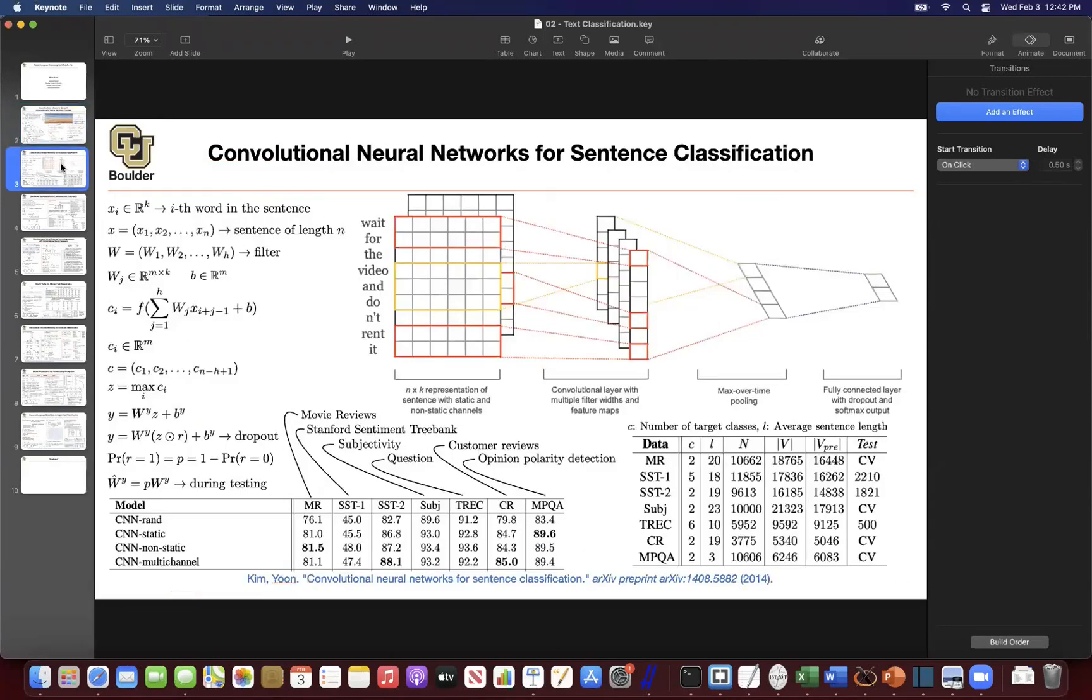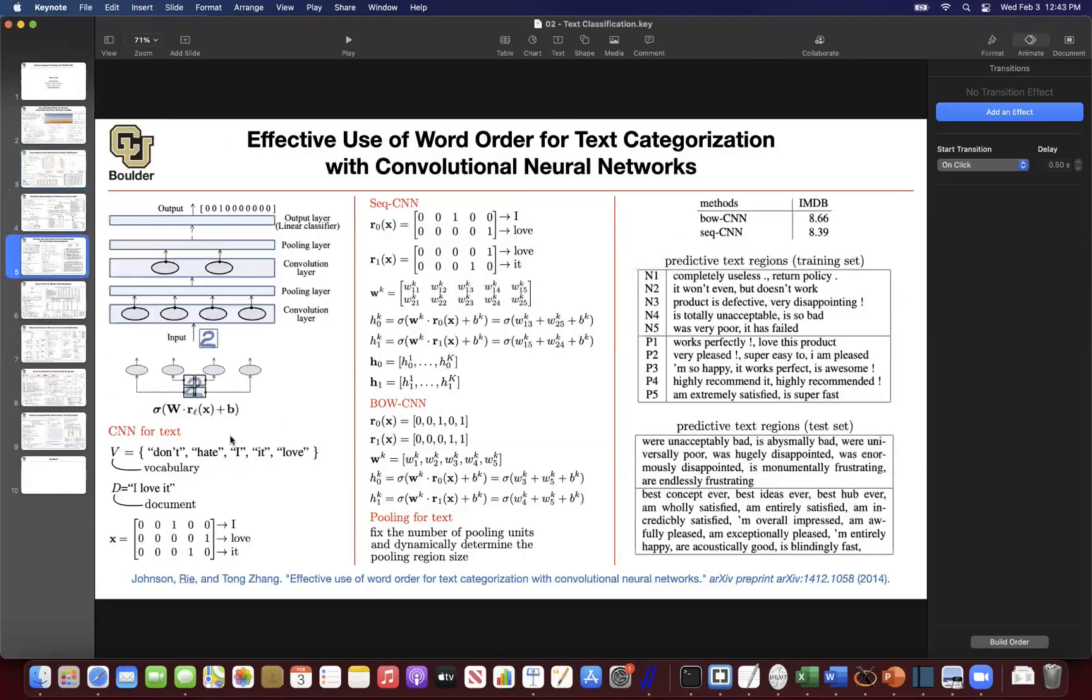Then we said, perhaps, if we treat sentences the same way that we treated images, where each word could be thought of as a pixel, then we can use convolutional neural networks to deal with that. And then we saw two versions of it. The first version is using word vectors, and the other one is using one-hot encoding for the words.